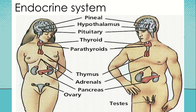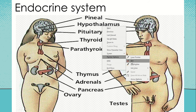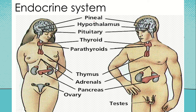As you can see here, we have the different organs under the endocrine system. We have the pineal gland, hypothalamus, pituitary, thyroid, parathyroids, thymus, adrenals, pancreas, ovaries, and testes.